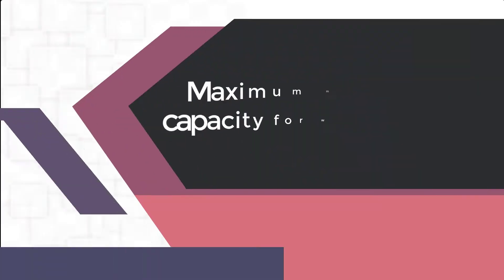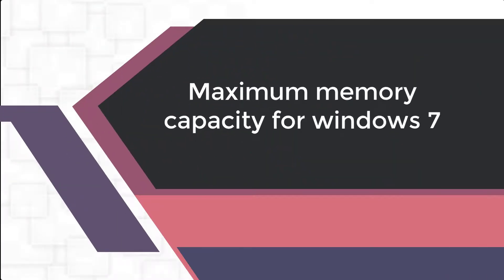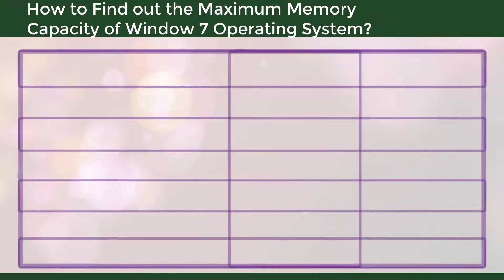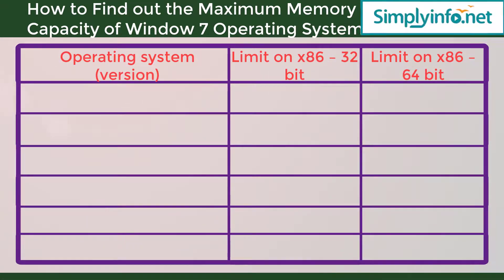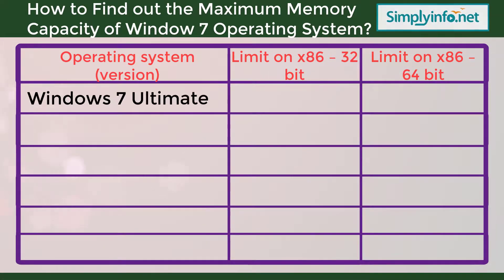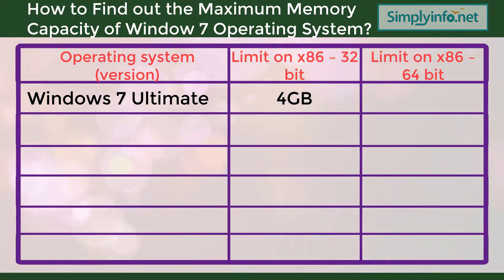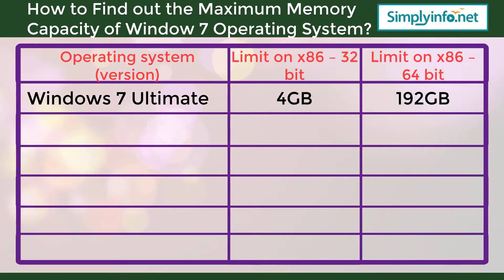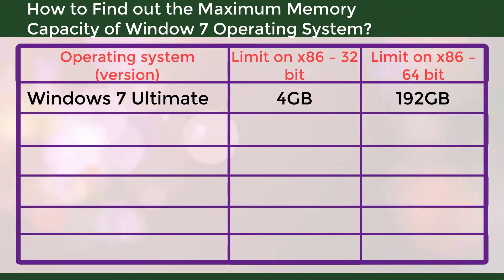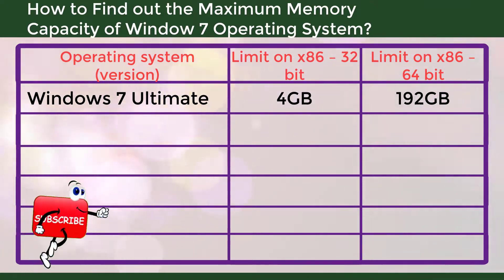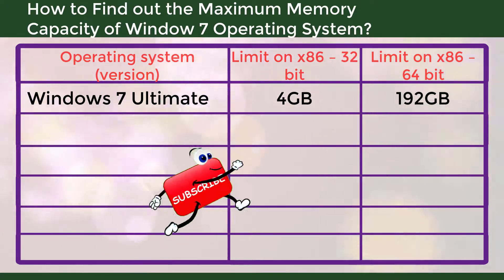The maximum memory capacity of Windows 7. For Windows 7 Ultimate with a 32-bit operating system, it is 4 GB of memory. Whereas for 64-bit, it is 192 GB of memory.